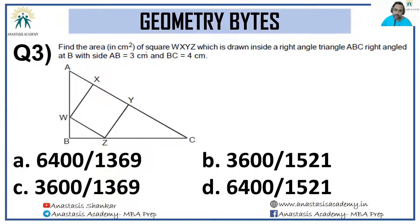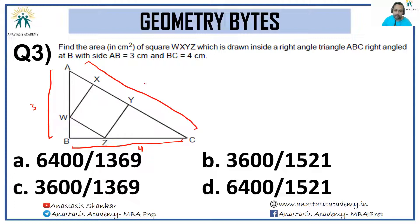Next, find the area in centimeters squared of square WXYZ drawn inside right-angle triangle ABC, right-angled at B, where AB is 3 and BC is 4. So AC is 5 by the Pythagorean theorem. If the side of the square is 'a', then WZ = a. Triangles WBZ and ABC are similar — they share a 90-degree angle.